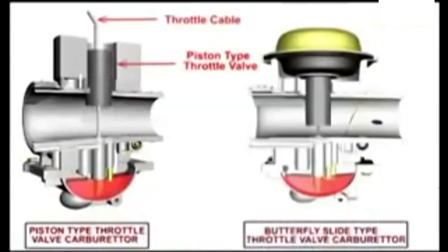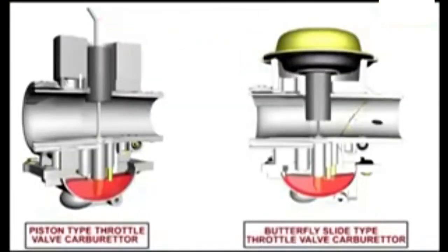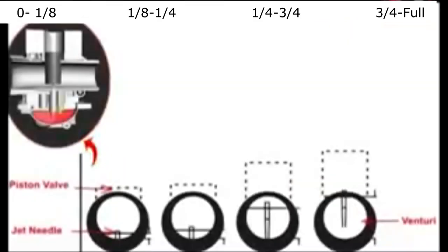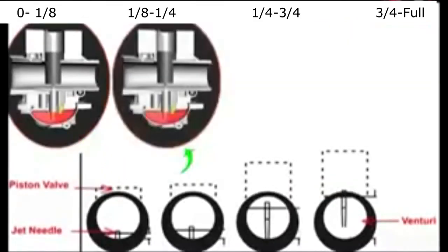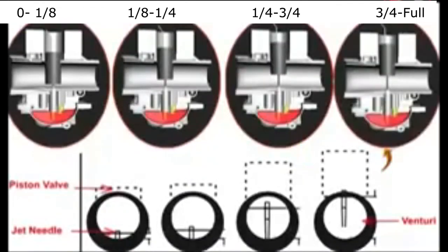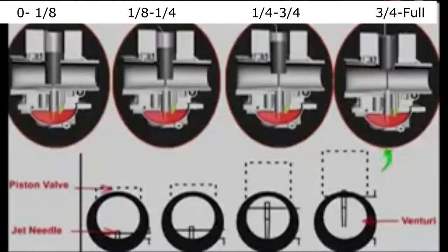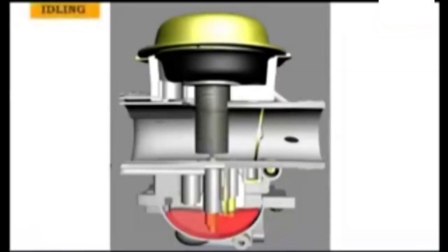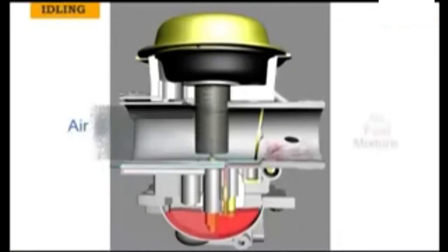In the last video we looked at the two major types of carburetors and their differences. In this video we're going to look at the throttle openings and what adjustments are in play at each one. This is what a carburetor looks like when the engine is idling — the butterfly valve and the slide are closed, and the mixture is only going through the pilot circuit to keep the engine running.